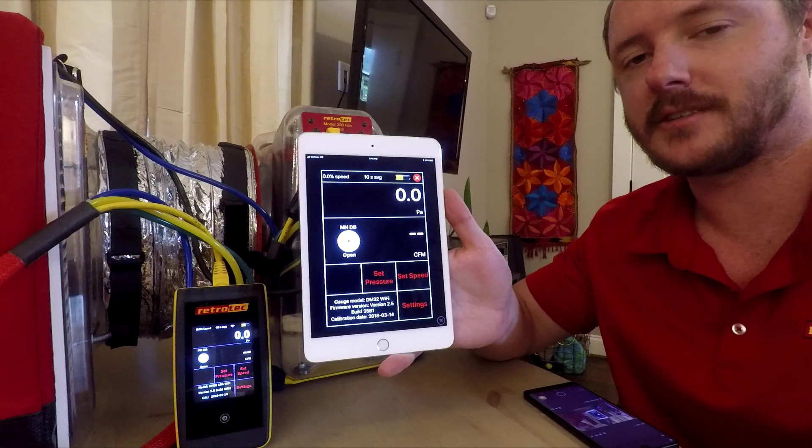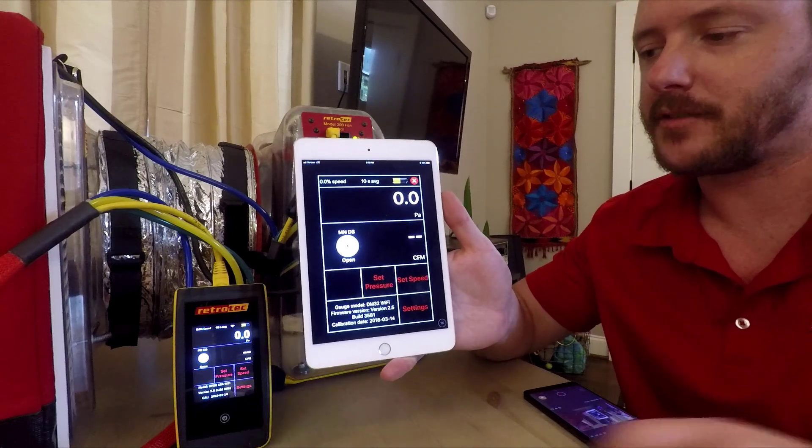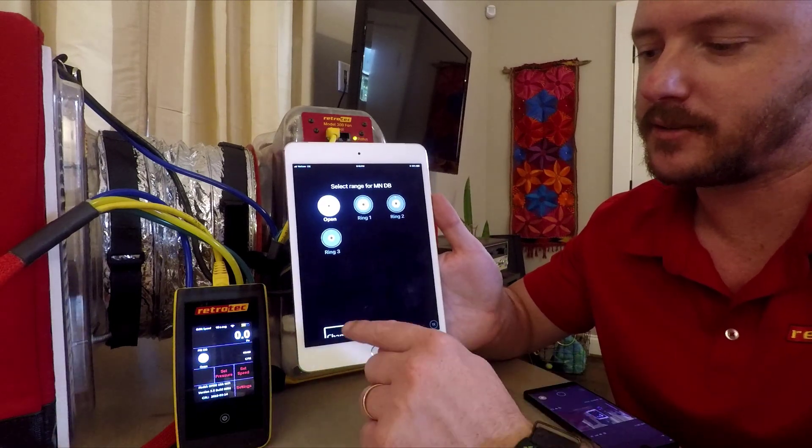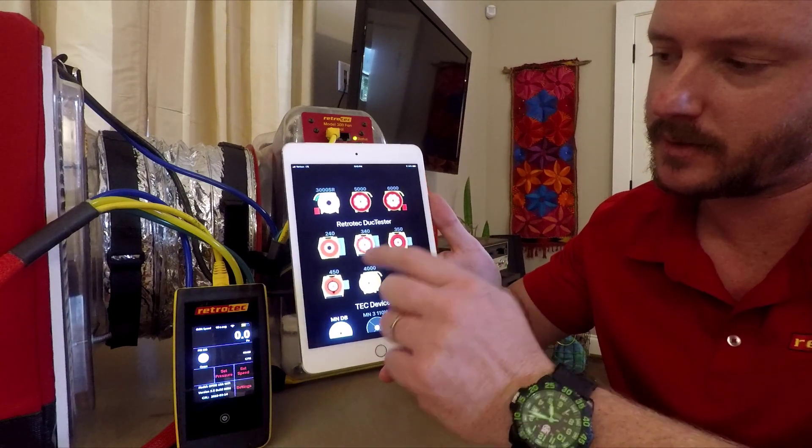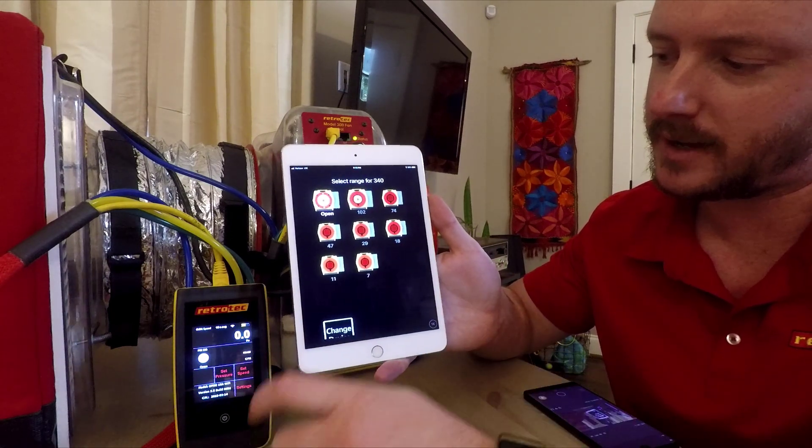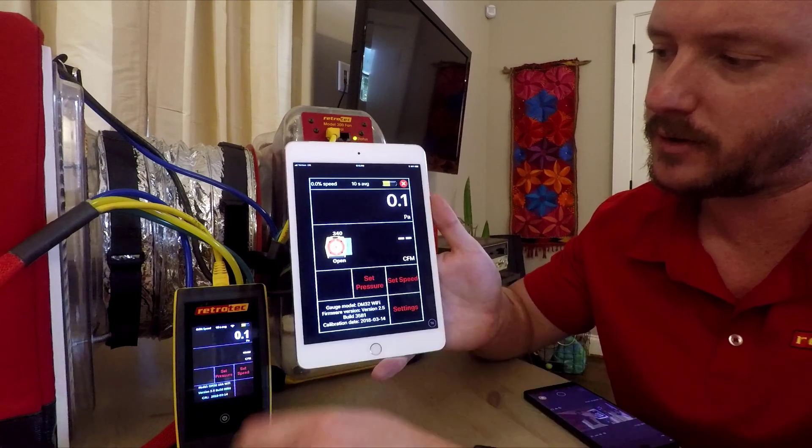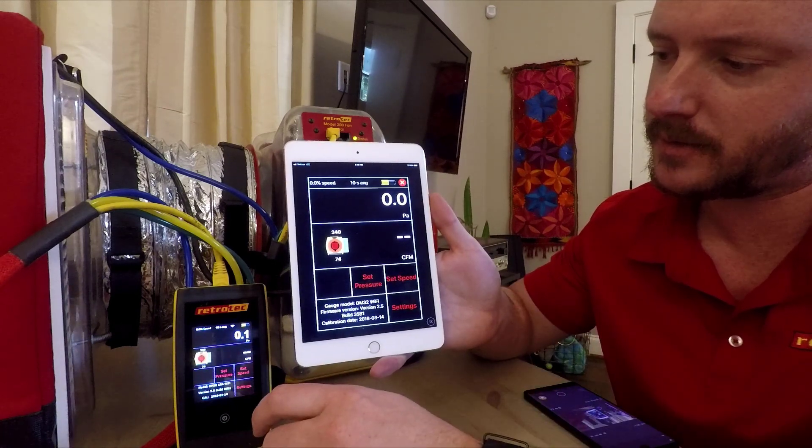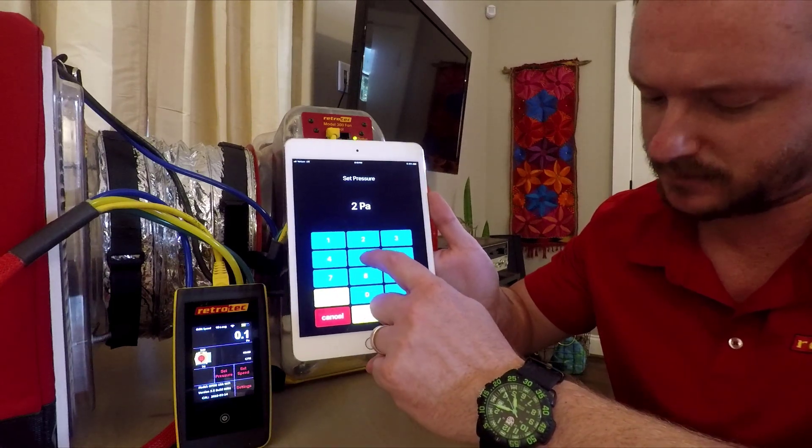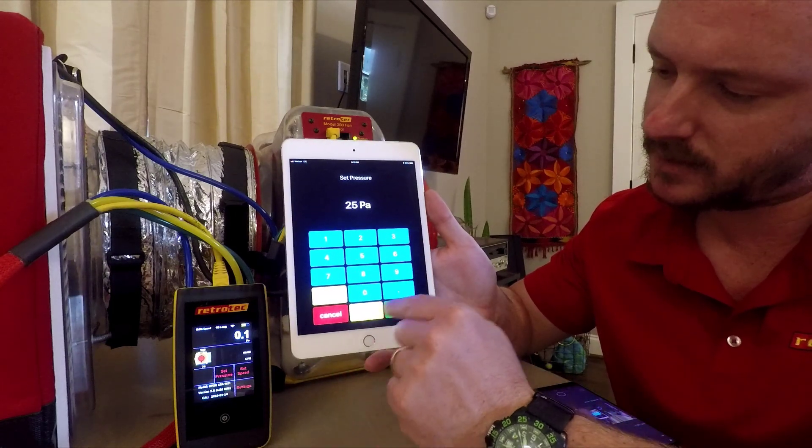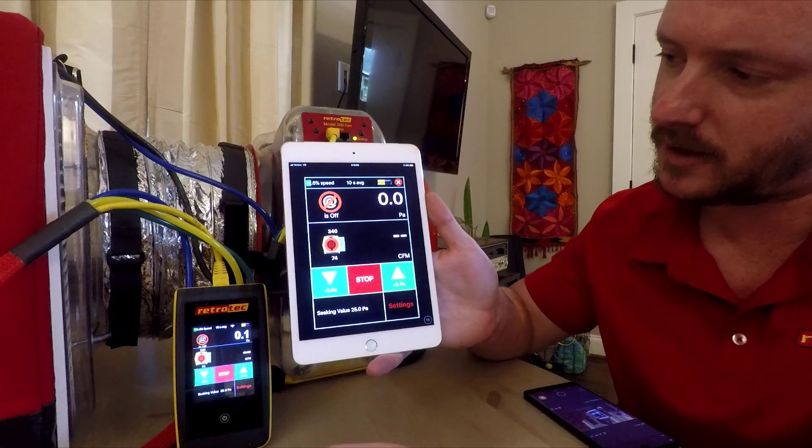So now we'll run our test with the RetroTech duct tester set up. So we'll switch back to the appropriate fan. We have it on the 74 ring. We'll set our pressure to 25 and off it goes.